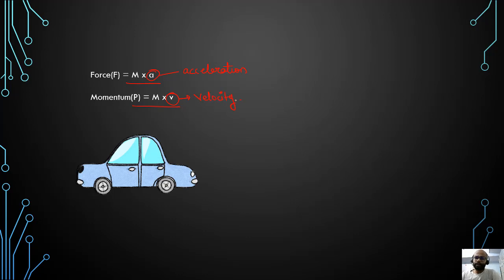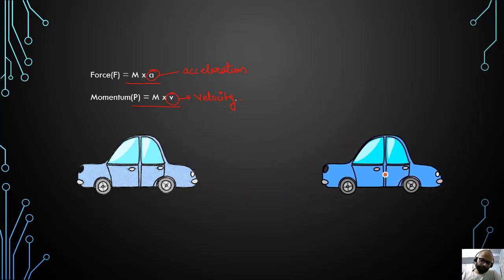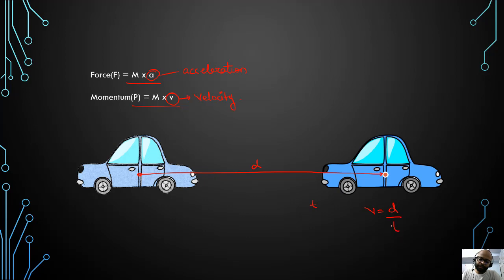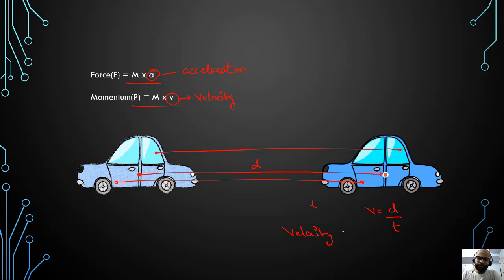But what is 'body'? Take a look at this. If you see, this car moved a displacement of D, and it took T time to do it. So the velocity would be D by T. And it doesn't really matter which point you take — because if you take this point or this point, they all have travelled the same amount of displacement. So the velocity will always be the same.